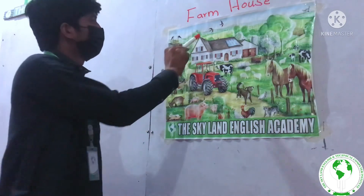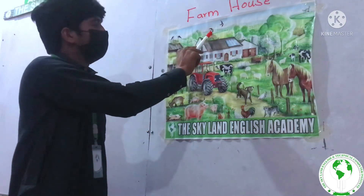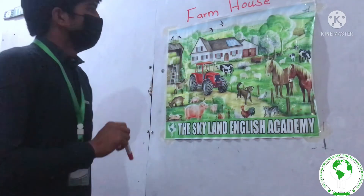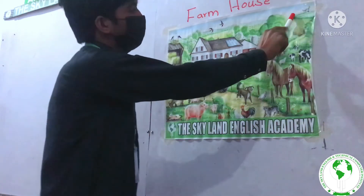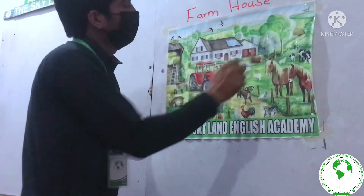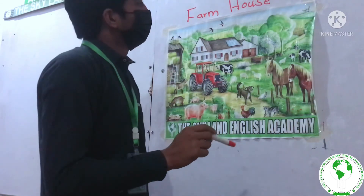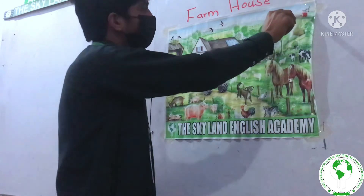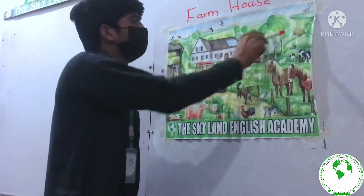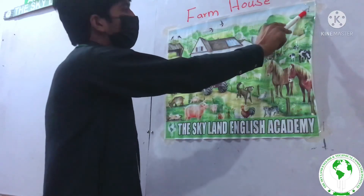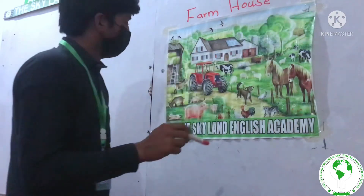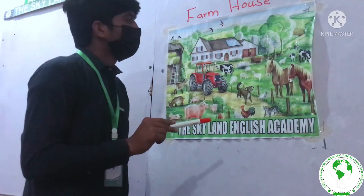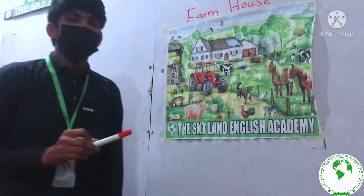This is a pigeon, and the pigeon color consists of two or three colors — like yellow color, black color, and white color. This pigeon is flying in the air.